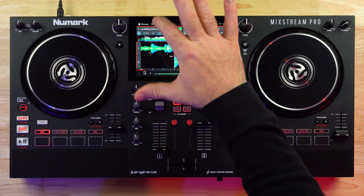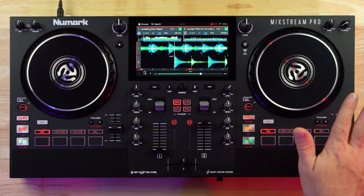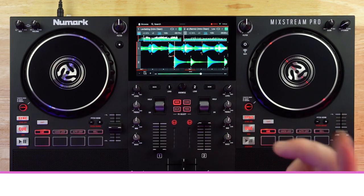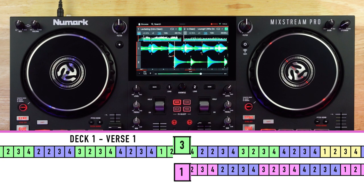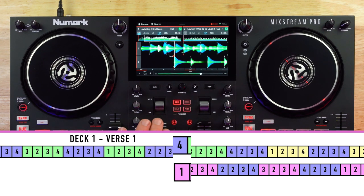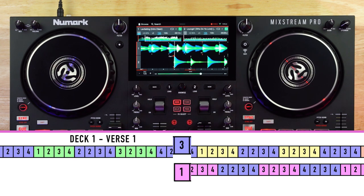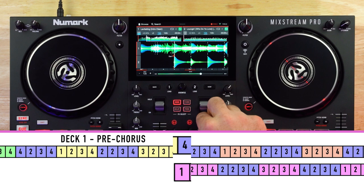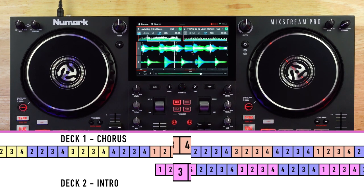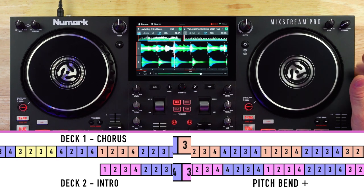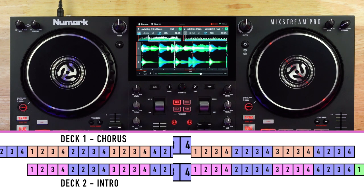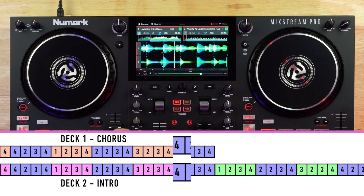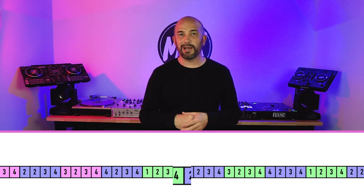I'm going to go back to that pre-chorus of Levitating and start the new track just a hair too late. Then I'm going to nudge it in place using the outside ring of the jog wheel, or alternatively I could use the pitch bend buttons — plus or minus. All right, we're going to get ready for that pre-chorus again. I'm going to start this one late — and now I'm going to speed it up. I got it back in line. Same thing if I was off, I could use the pitch bend button, and I saved the mix by pitch bending.